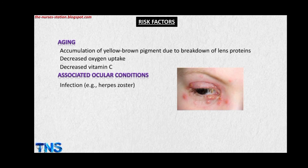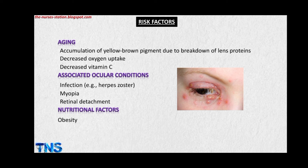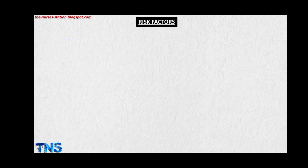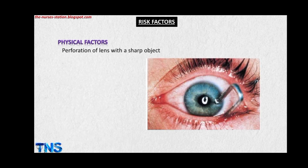Associated ocular conditions which may increase the risk of cataract include infections like herpes zoster, myopia, and retinal detachment. Nutritional factors responsible for causing cataract include obesity, poor nutrition, and reduced levels of antioxidants. Physical risk factors include perforation of the lens with a sharp object, UV radiations, or X-rays falling on the eye.